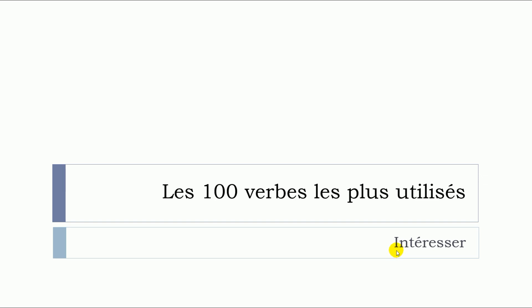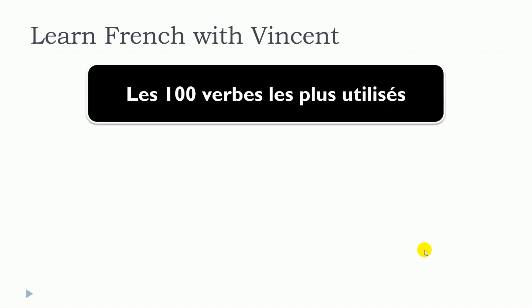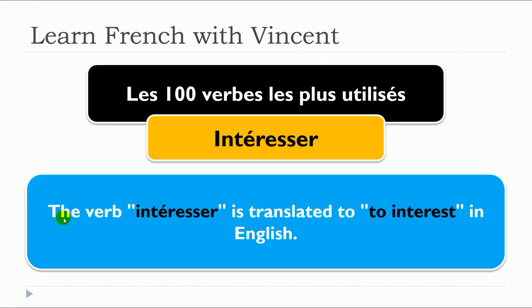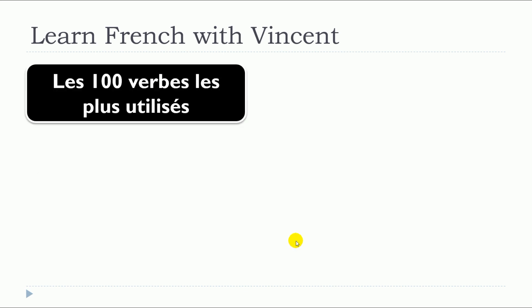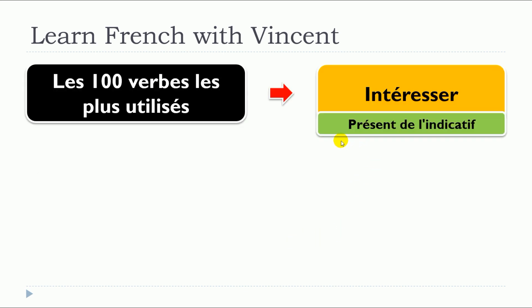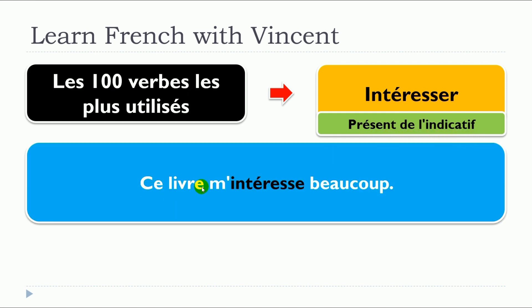In this lesson, we will see together the verb « intéresser ». The verb « intéresser » is translated to « to interest » in English. And so, we will see some examples with « intéresser » in « présent de l'indicatif ». Ce livre m'intéresse beaucoup.